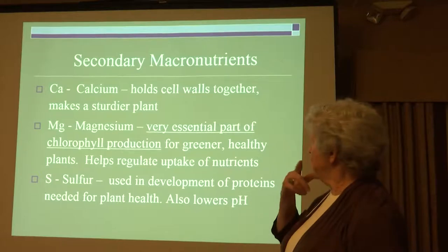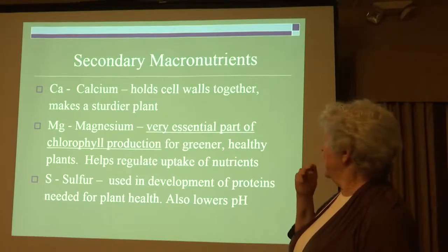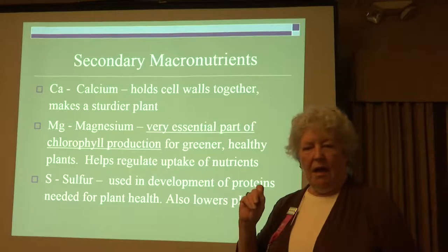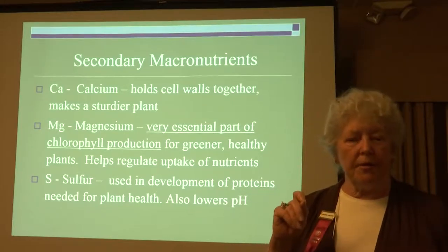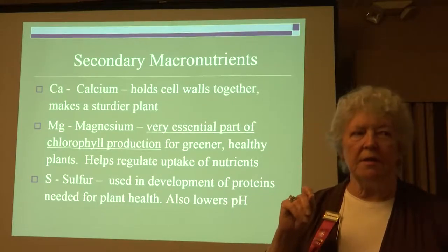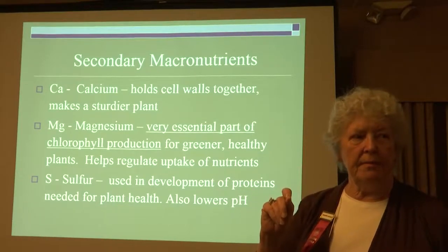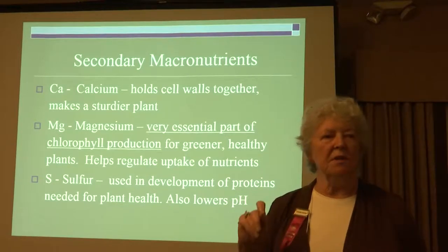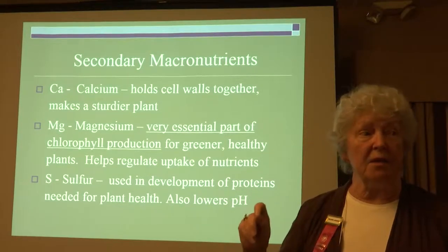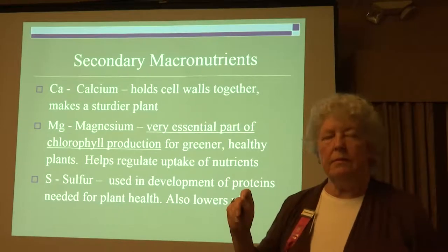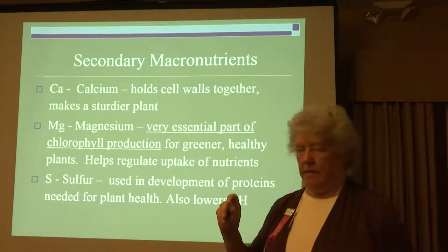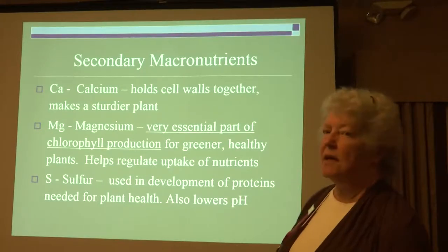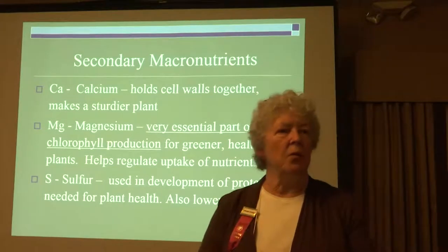Magnesium is very essential for chlorophyll. Be very careful — California soils have a lot of magnesium. There is a product people will tell you to put on for basal breaks; don't do that. And then calcium: calcium holds the cell walls together.